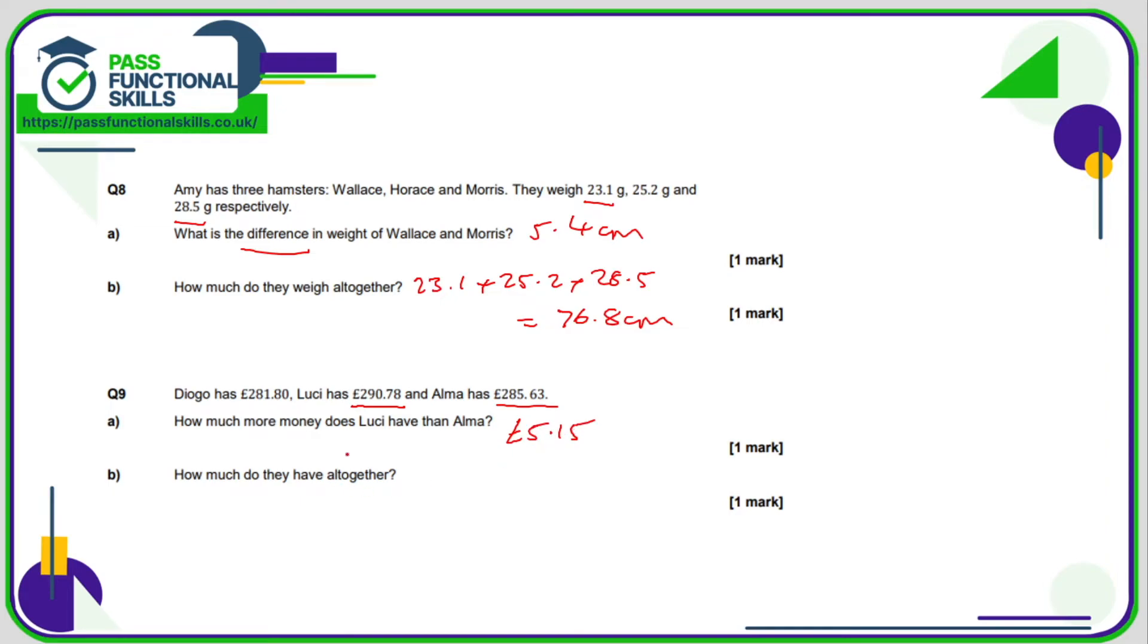How much do they have all together? So that means we just need to add these amounts. And if we add them all together, and for Diogo you can type into your calculator 281.8 or 281.80, it makes no difference. And you'll get a combined total of £858.21.